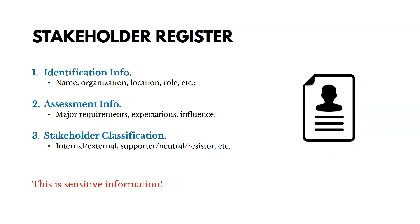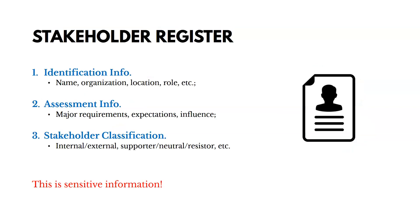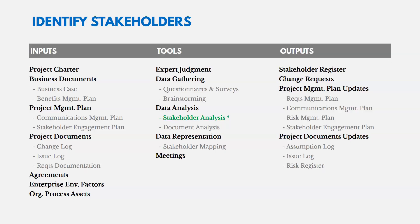The stakeholder register is the key output. It includes basic identification information — name, organization, location, role, etc. — as well as assessment information like major requirements, expectations, and how they could influence things. It also includes stakeholder classification: are they internal or external, a supporter, neutral, or a resistor? It can also include information from classification models like the power interest grid and the salience model.